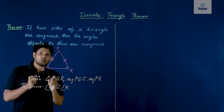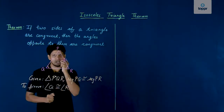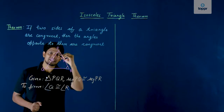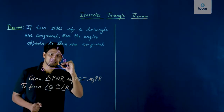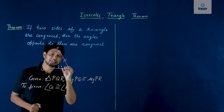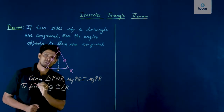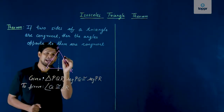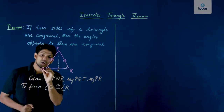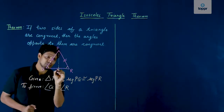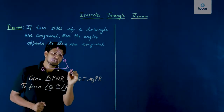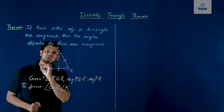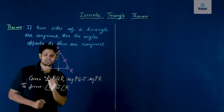To prove this, we need to do a construction. We draw the angle bisector of angle P, that is PS. This creates two angles: angle QPS is congruent to angle RPS. This is our construction.